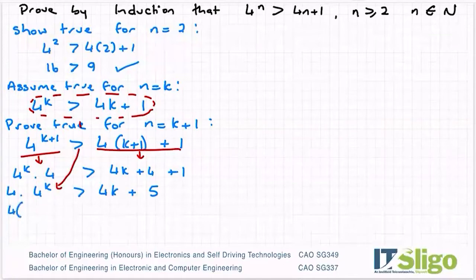So that I get 4 times the quantity 4k plus 1 is that greater than 4k plus 5. So I've got 16k plus 4 is that greater than 4k plus 5.